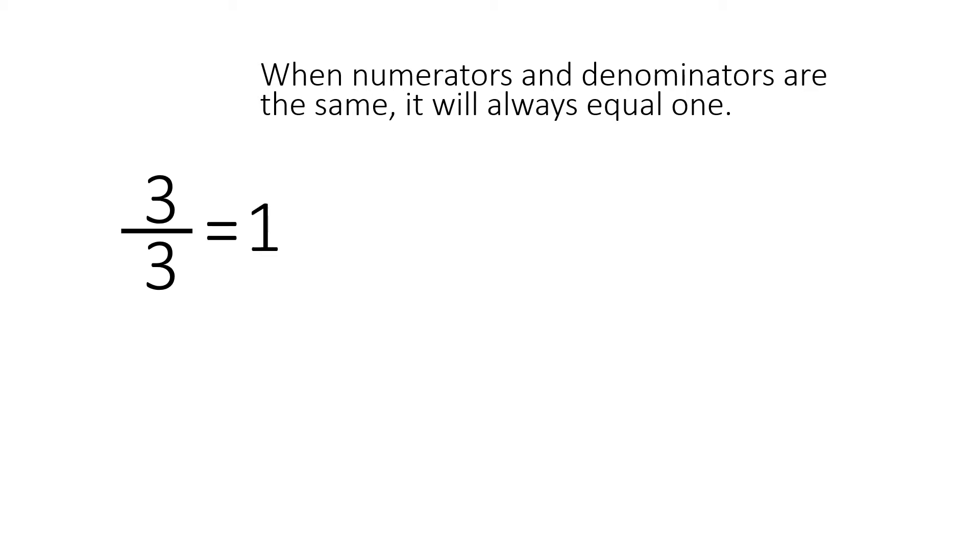So here we have 3 over 3, 3 thirds. This is improper. However, when the numerator, the top number, and the denominators are the same, denominators are the bottom number, it will always equal 1. So 3 thirds equals 1.